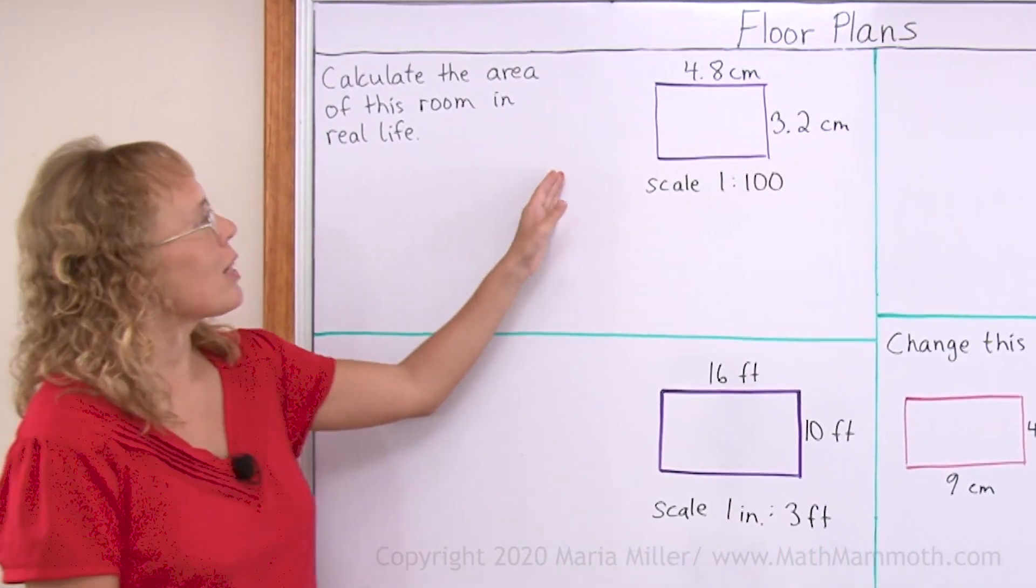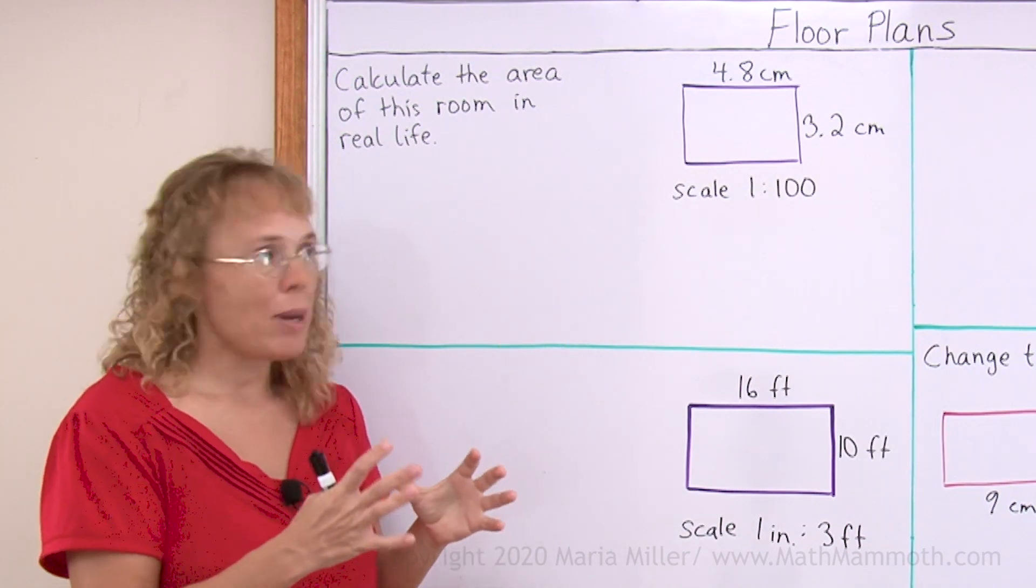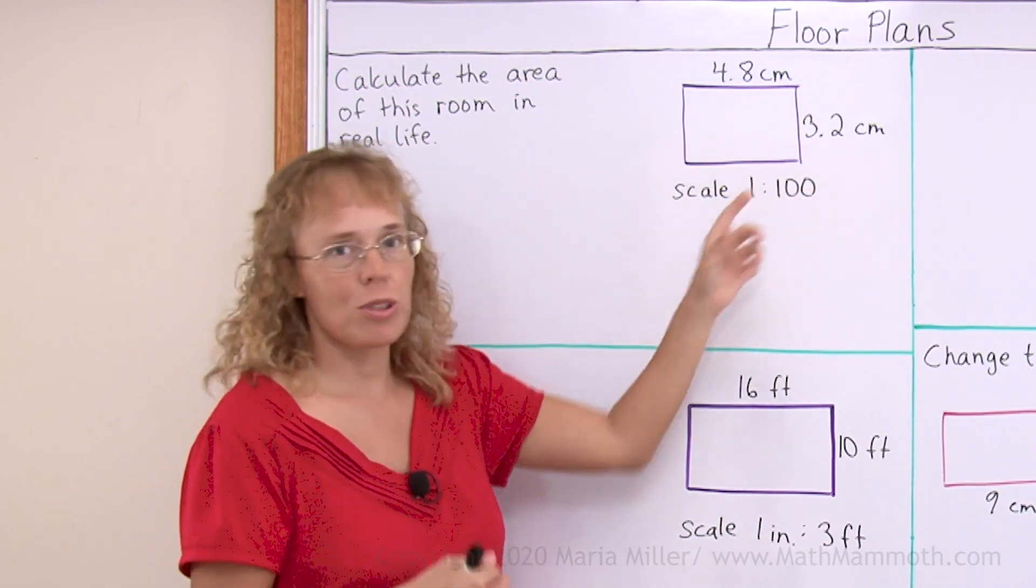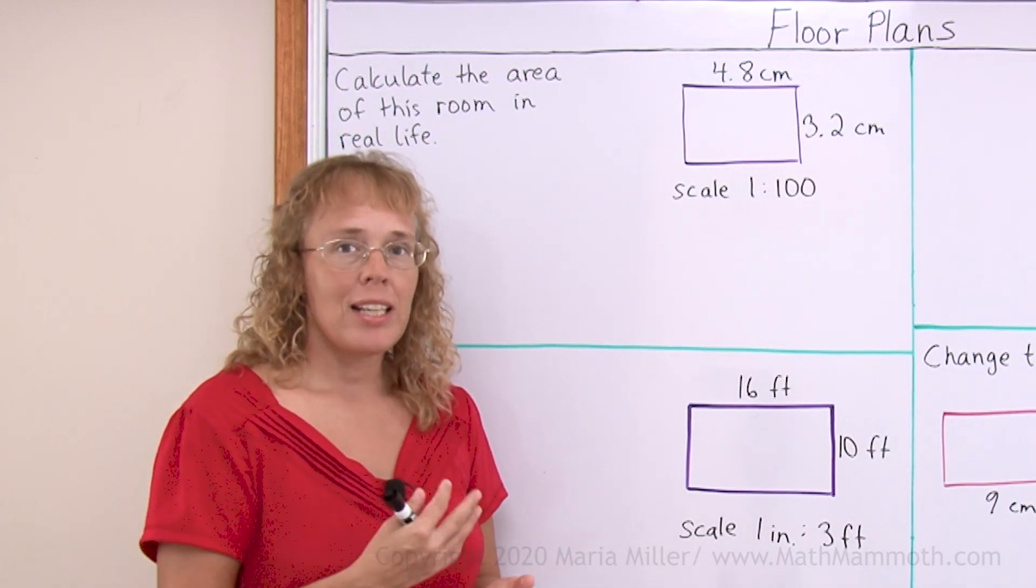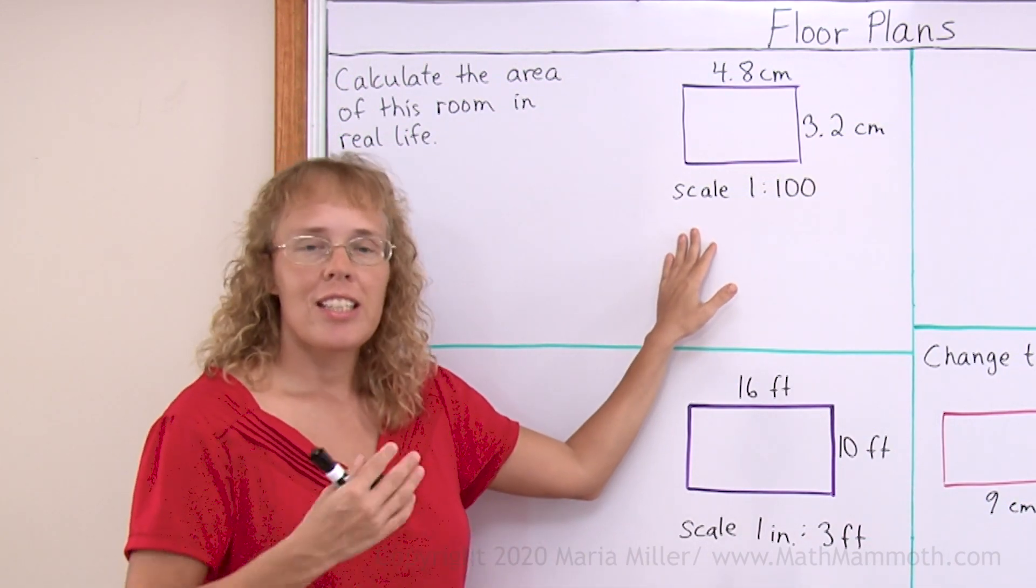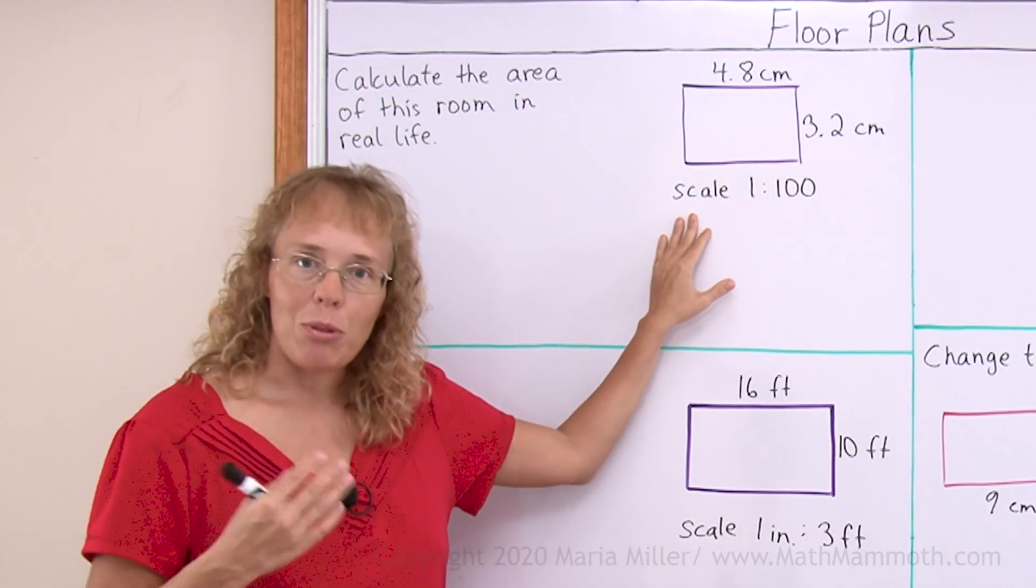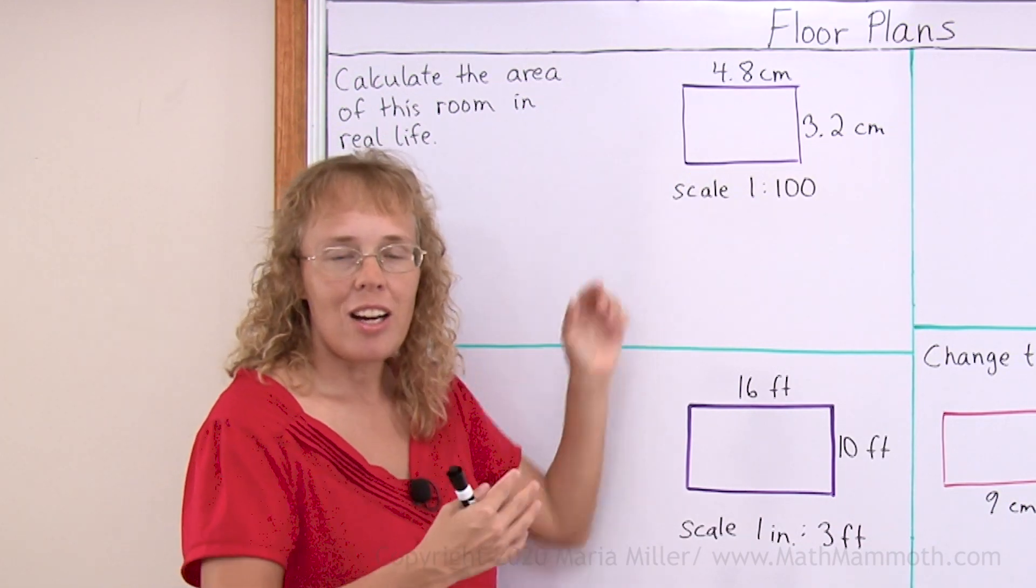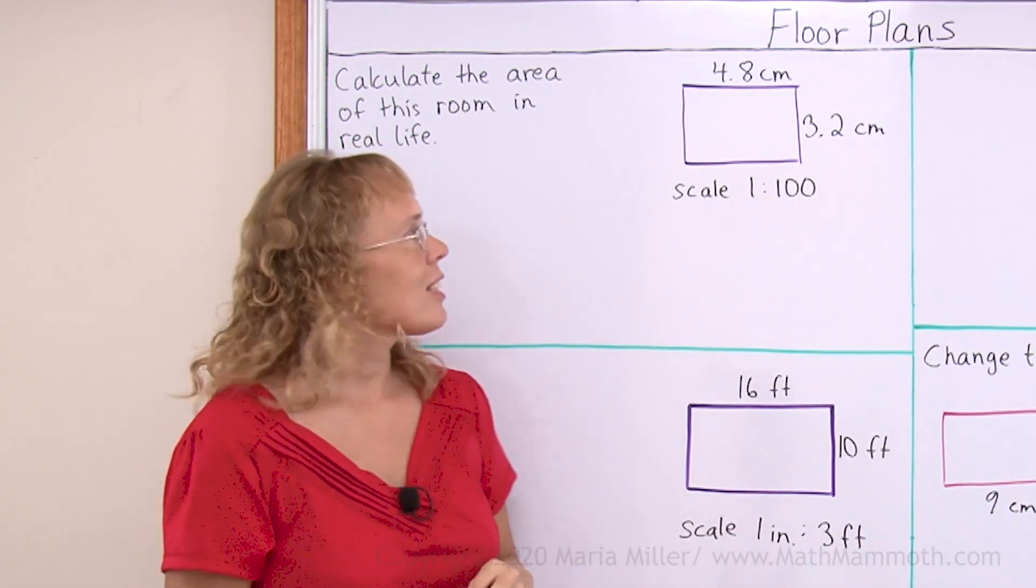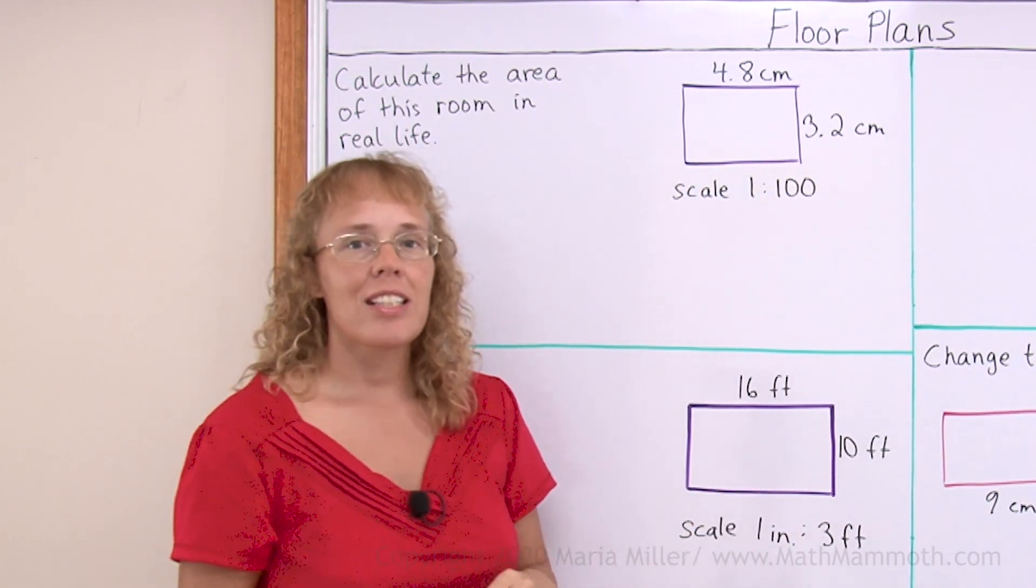Here's one typical one. Let's say this is a room, and it is written on your plan on paper, so it is only 3.2 cm by 4.8 cm. And then the plan has a scale ratio that tells us how big it will be in reality. In this case the scale is 1 to 100. So that means that 1 unit here is actually 100 of those units in reality. So 1 cm in the plan would be 100 cm in reality.